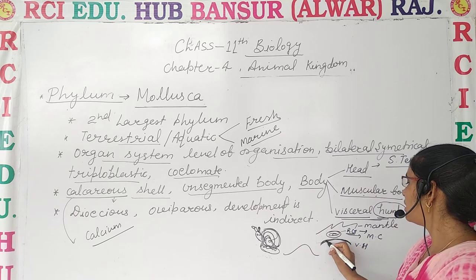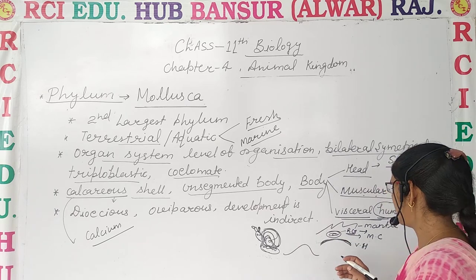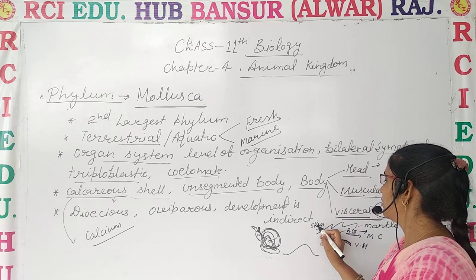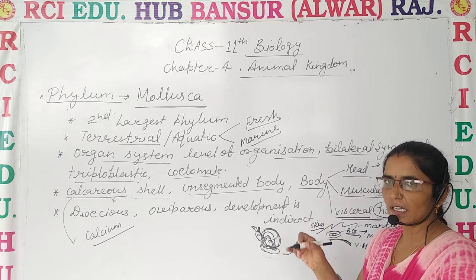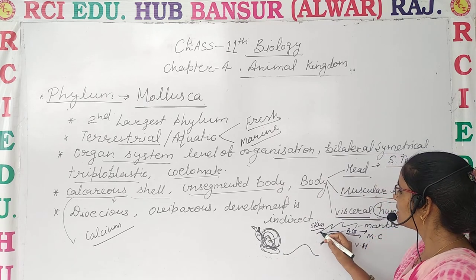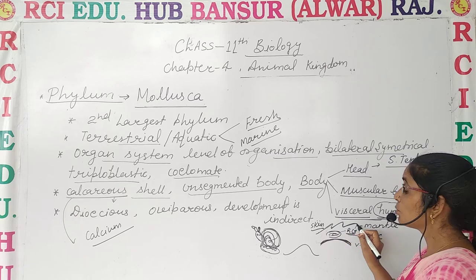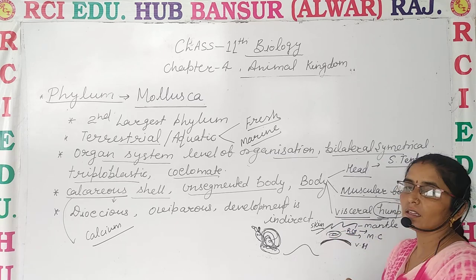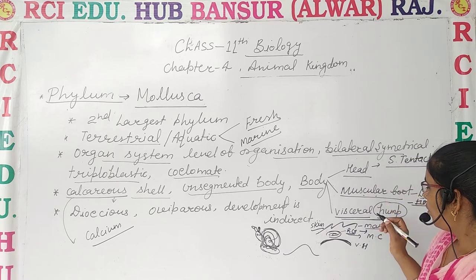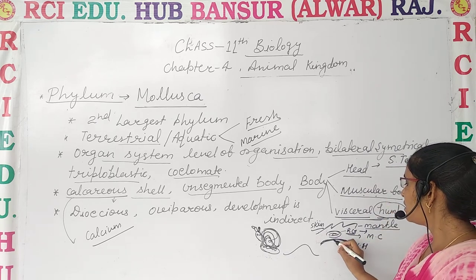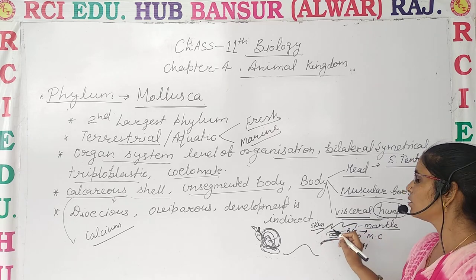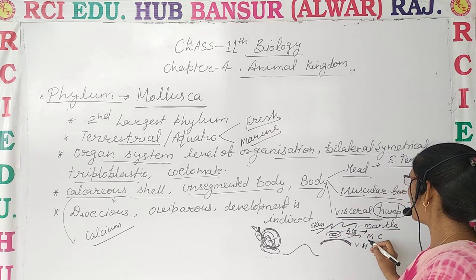The visceral hump is covered by a spongy layer made of skin, and this layer is called the mantle. The space between the mantle and the visceral hump forms a cavity, and that cavity is known as the mantle cavity.